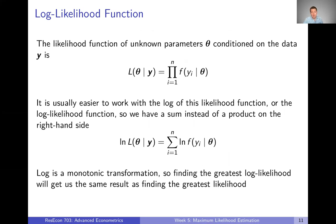That's basically the big conceit of maximum likelihood estimation: take the same density objects we're used to working with in statistics and flip them on their head. Think of them not as functions of data — the y's — but as functions of the parameters, with the y's as known. It seems maybe overly simple, but that's basically the whole idea: we take what we know about statistics and flip it on its head to get inference about parameters.